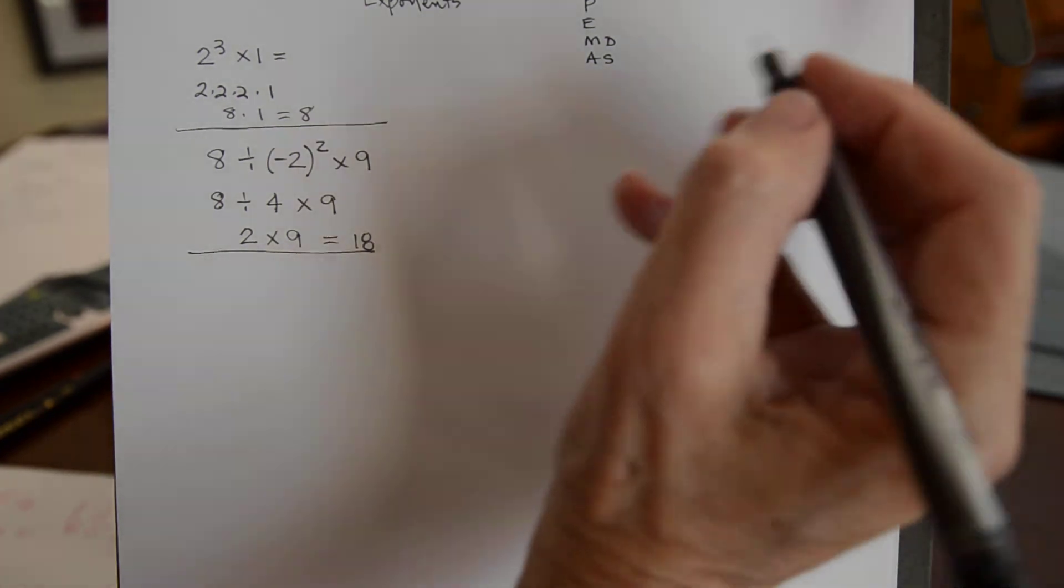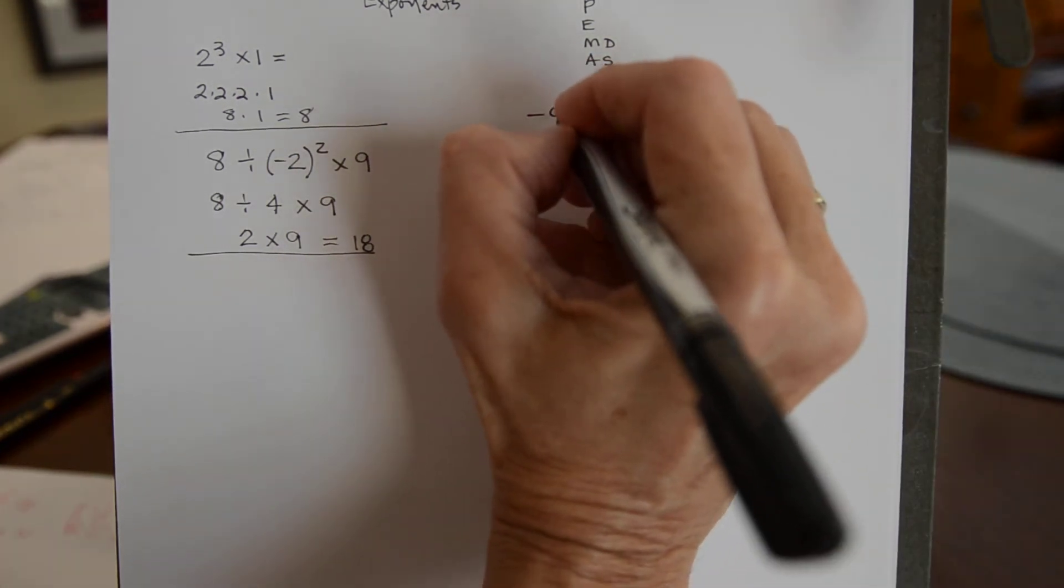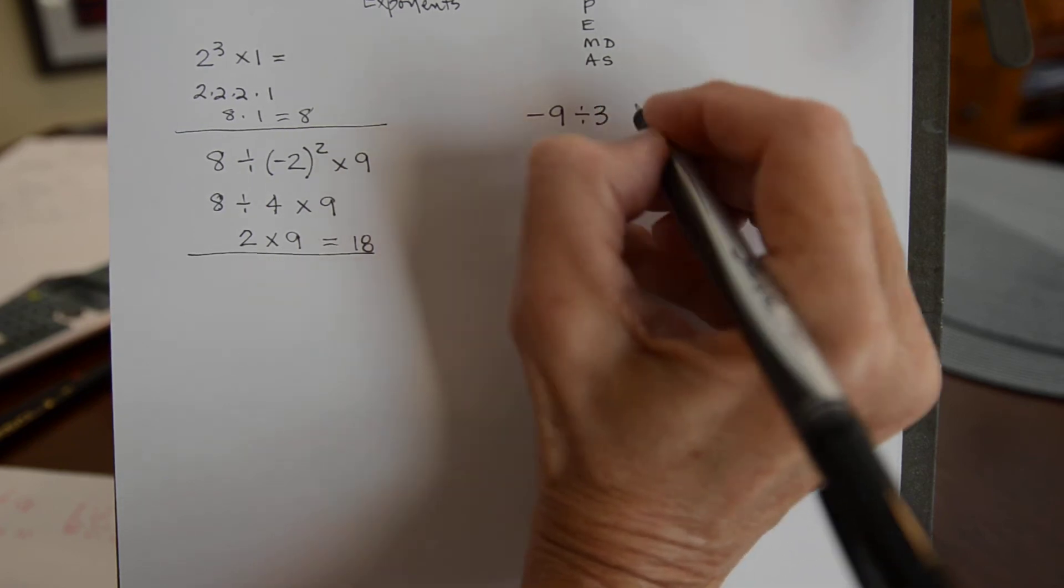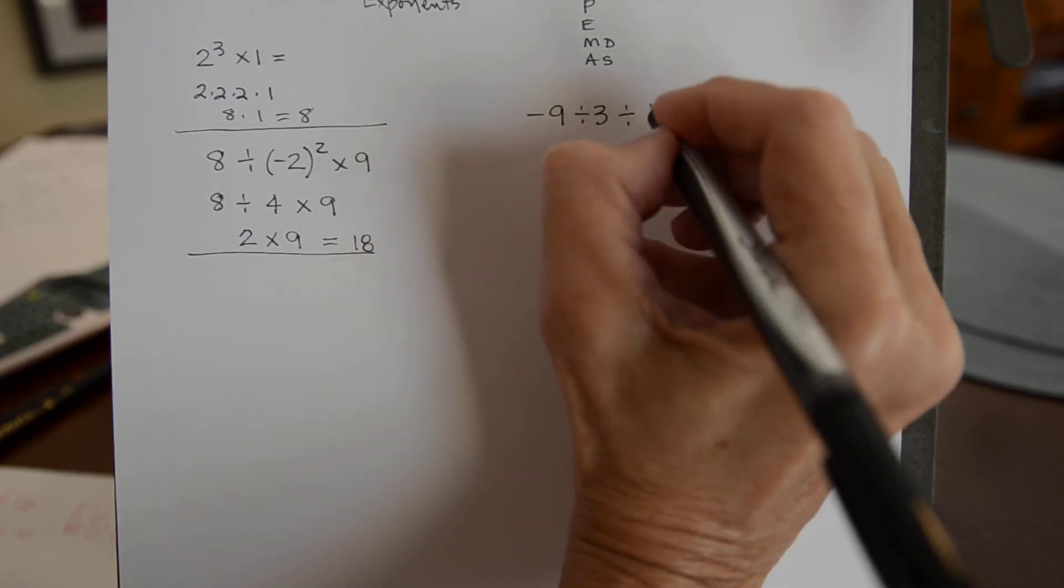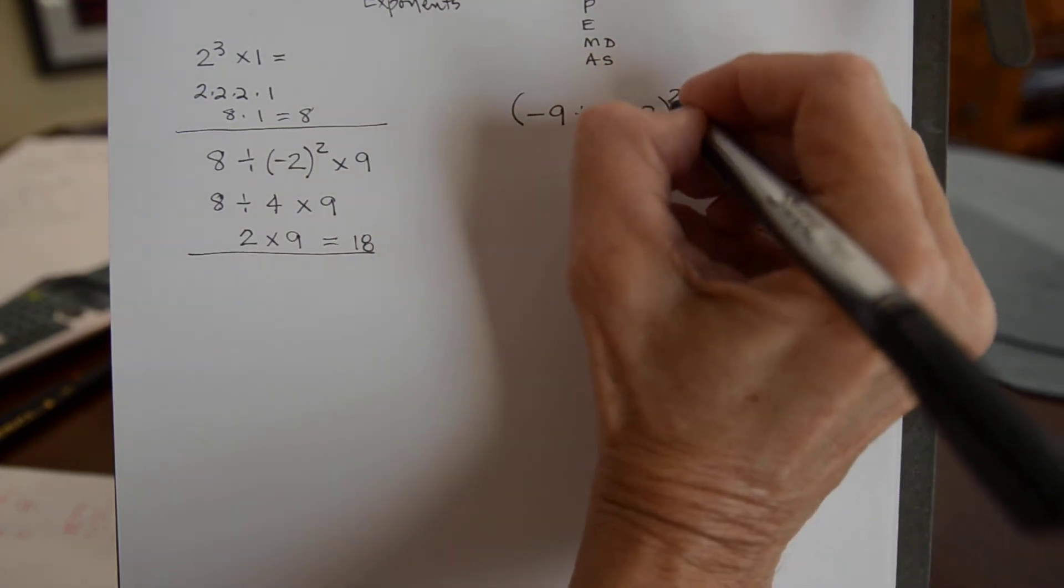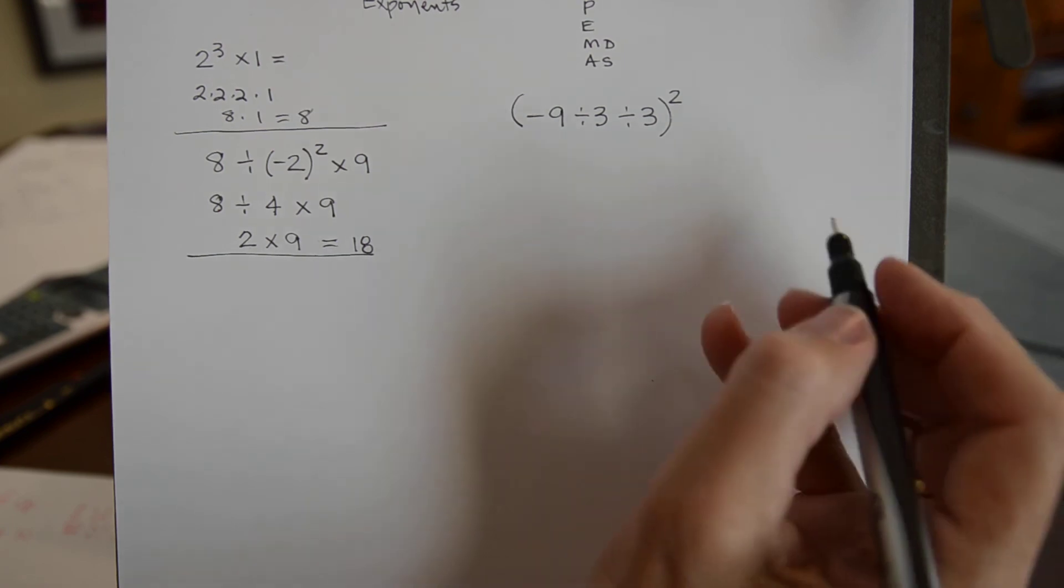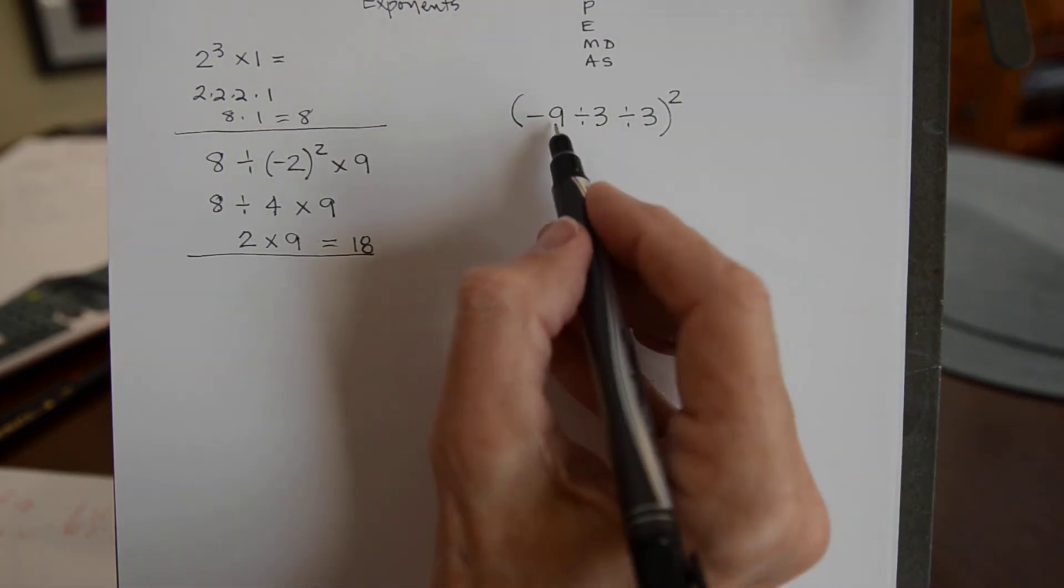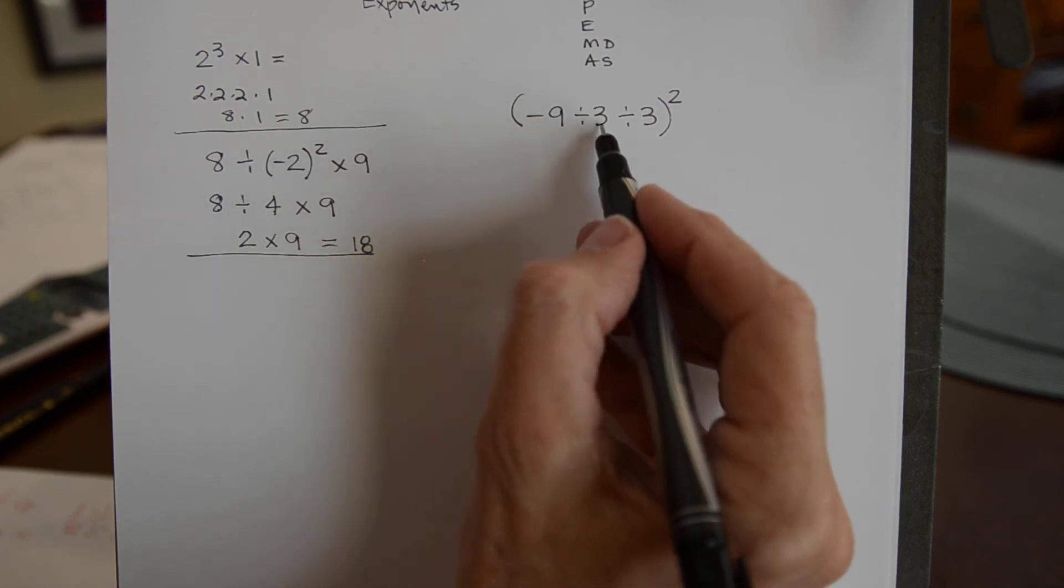Then the next problem is a negative 9 divided by 3 divided by 3 in parentheses and squared. So I need to do this division first.